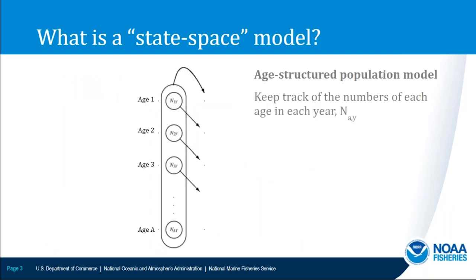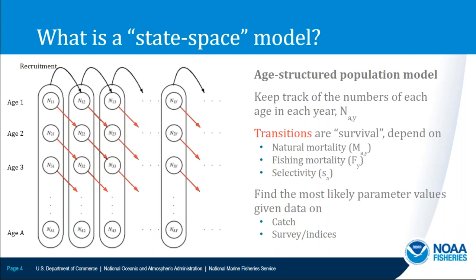Let's take it back and answer: what is a state-based model? Most age-based fisheries assessment models keep track of the numbers of fish at each age in each year — N sub A sub Y. The model defines how numbers at each age transition from one year to the next, which you can think of as survival. That survival function depends on parameters: natural mortality, fishing mortality, and selectivity. We fit the model by finding the most likely parameter values given data from catch and surveys.